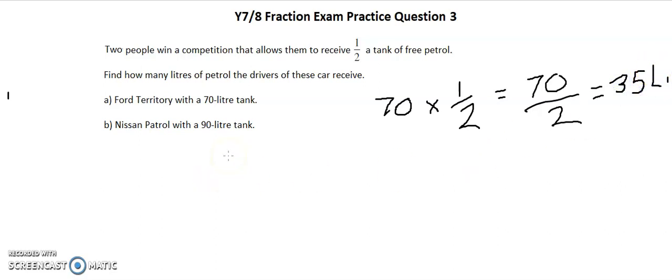Likewise, the second person has got a tank of 90 litres. So we're doing 90 times half. Again, the numerator always means the parts we have. So we got 90 times 1 is 90 over 2. Half of 90 is 45. So it will be 45 litres for the Nissan Patrol.